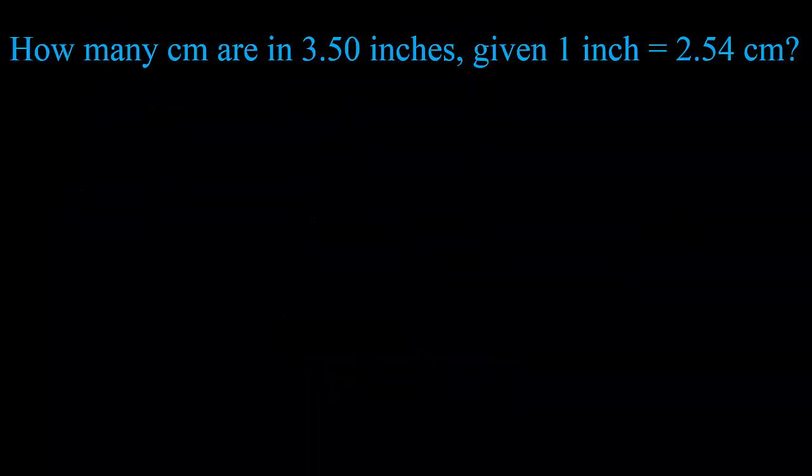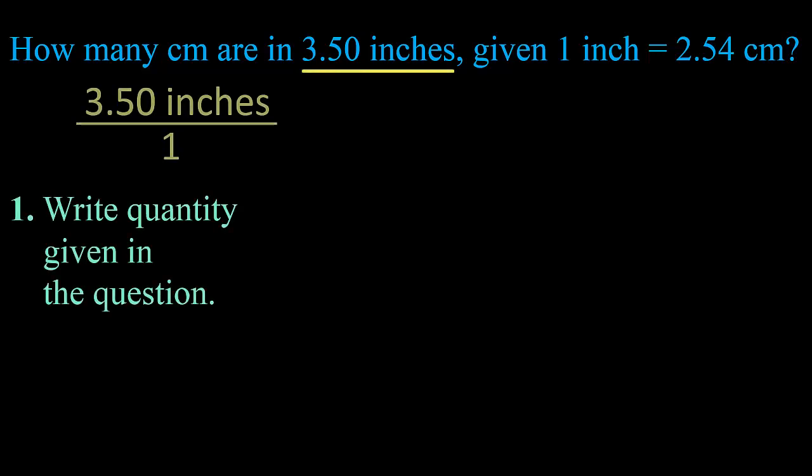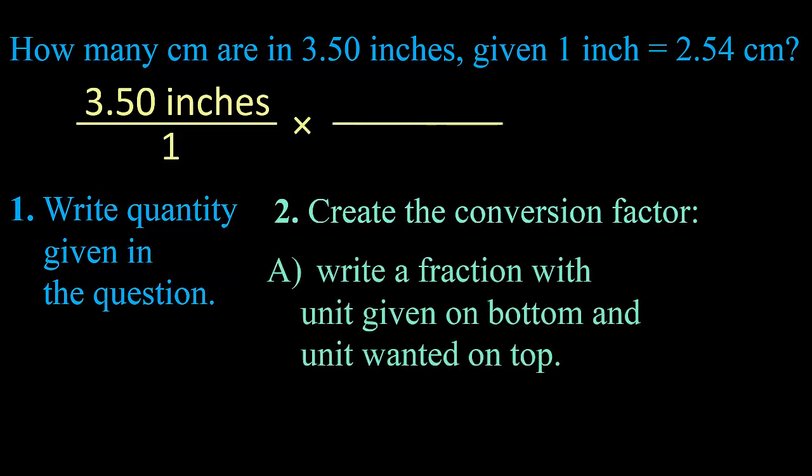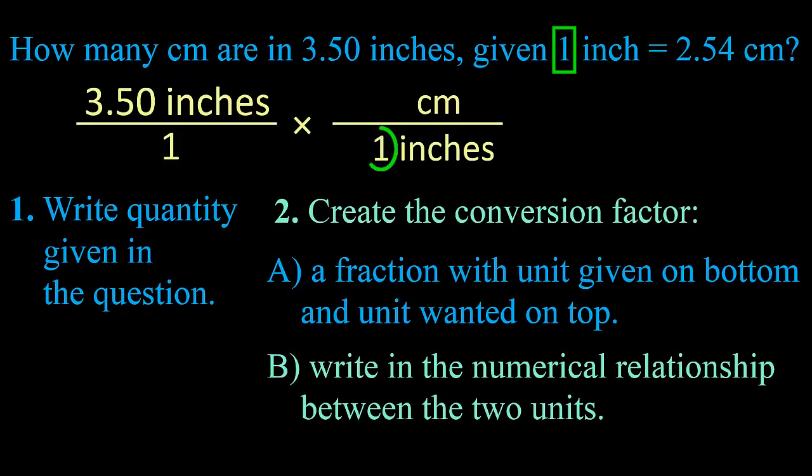Let's go back and review each step. Write the quantity given in the problem, and here we write it as a fraction to keep track of what's on top and bottom. Draw a line for the conversion factor, put on bottom the unit given, wanted unit on top, and then write in the numerical relationship between the two units.